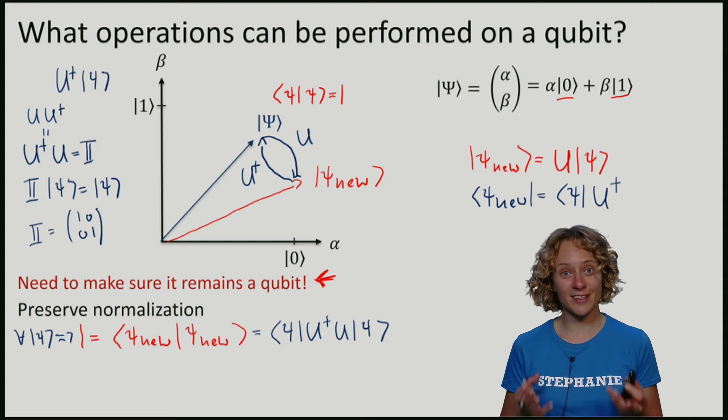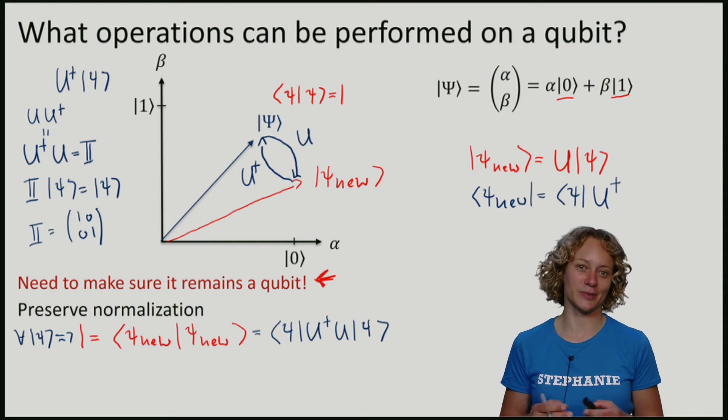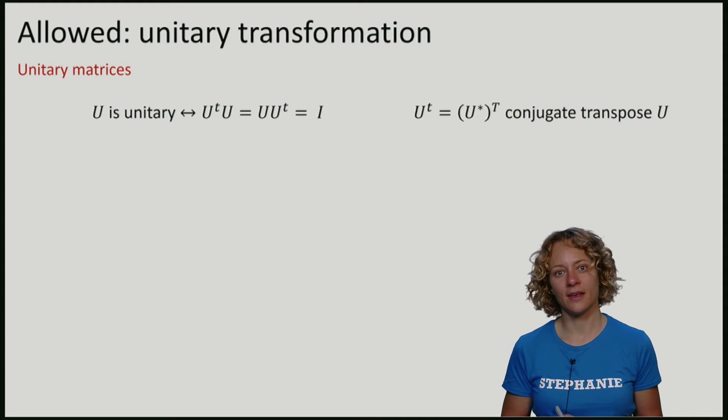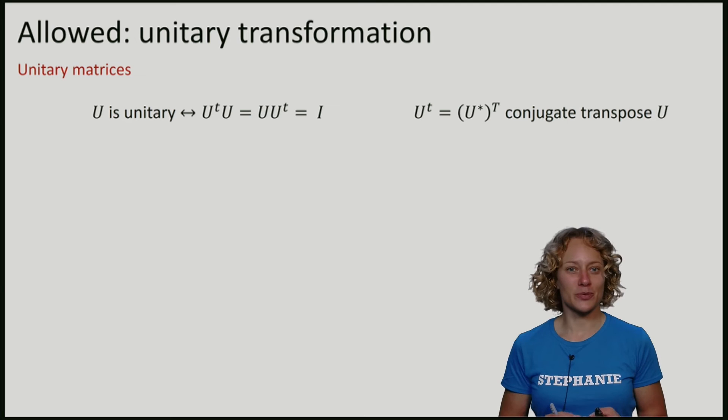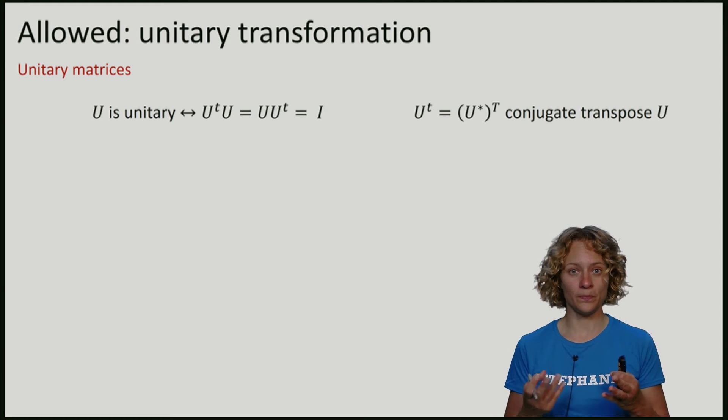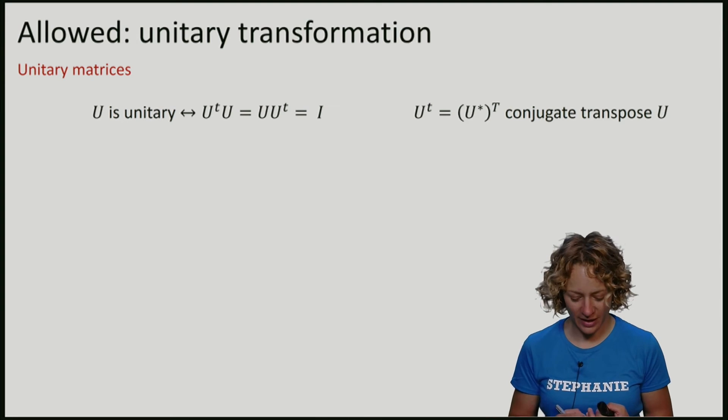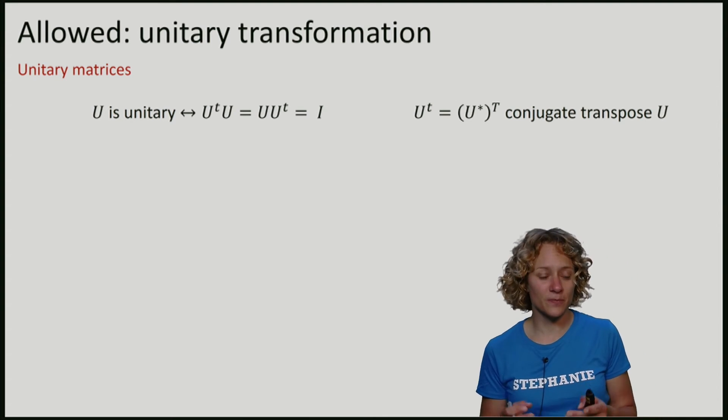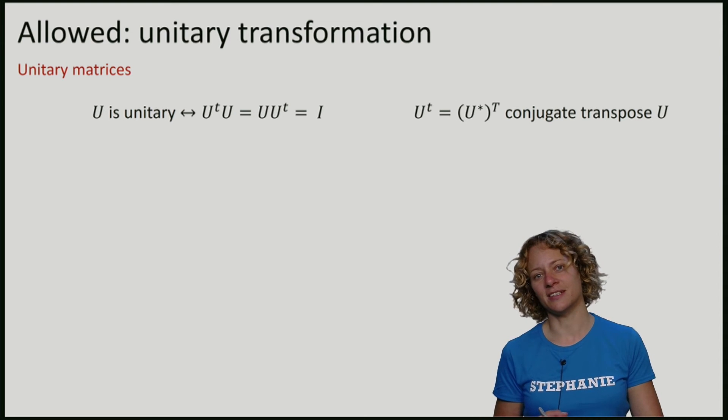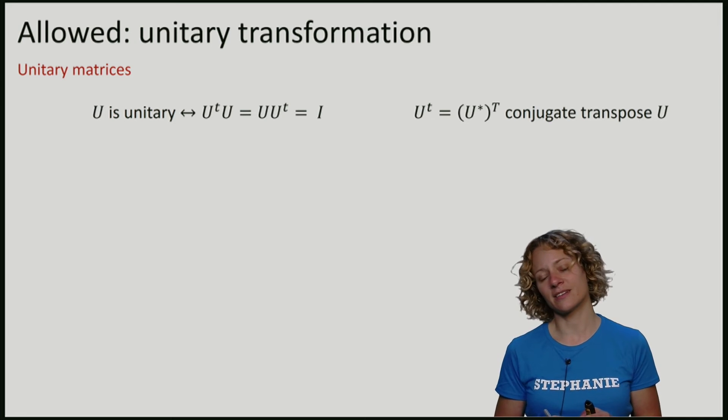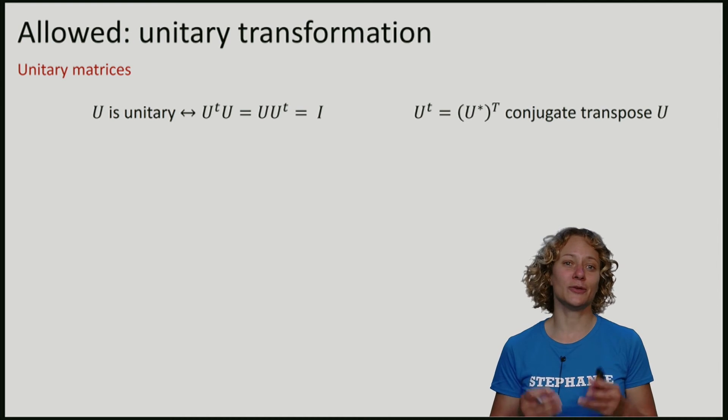Let's summarize what transformations are possible. We see that any operation we can apply is given by a matrix U, satisfying that U dagger U or also U U dagger equals the identity matrix. A matrix verifying this condition is called a unitary matrix.